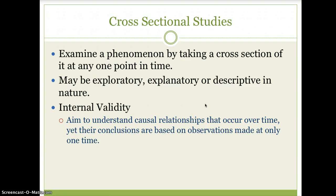We have cross-sectional studies, which examine a phenomenon by taking a cross-section of it at any point in time. They can be exploratory, explanatory, or descriptive in nature, and the book describes the U.S. Census as being a descriptive cross-sectional study. They don't have great internal validity — they aim to understand causal relationships that occur over time, yet their conclusions are based on observations made only at one point in time, so they can't really do that.